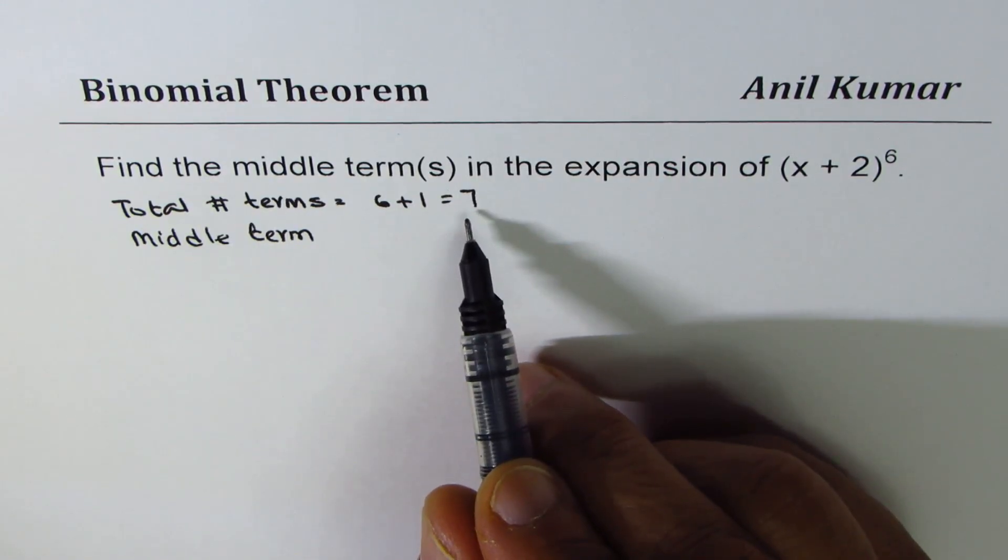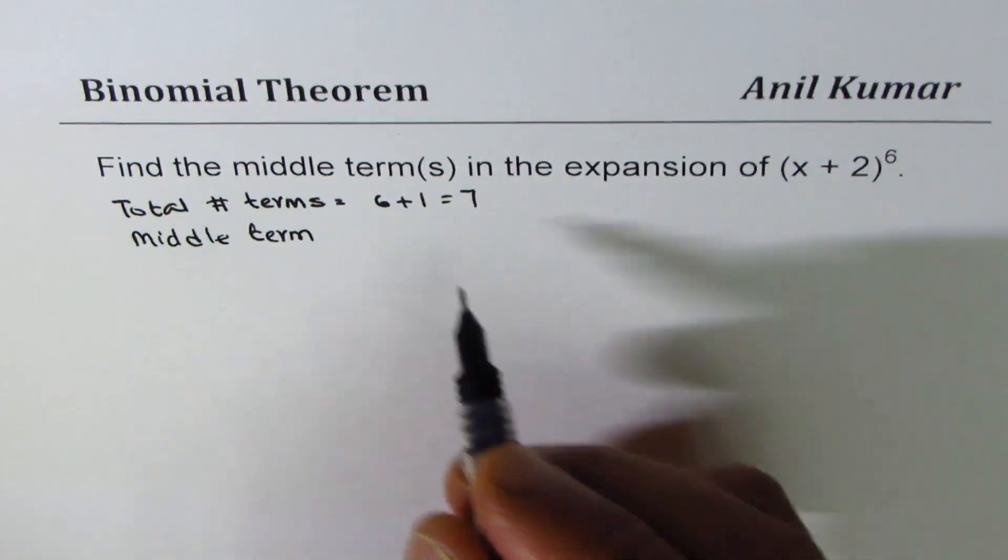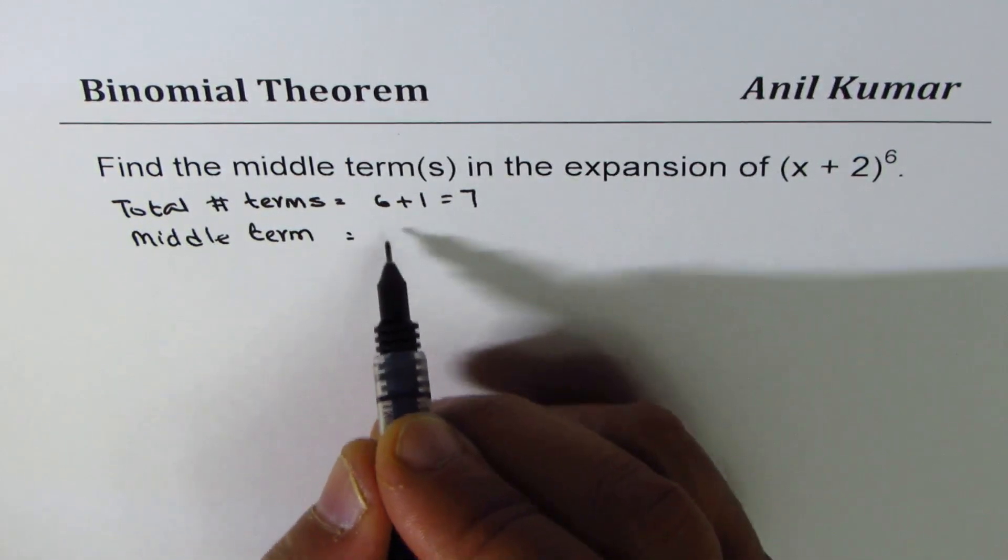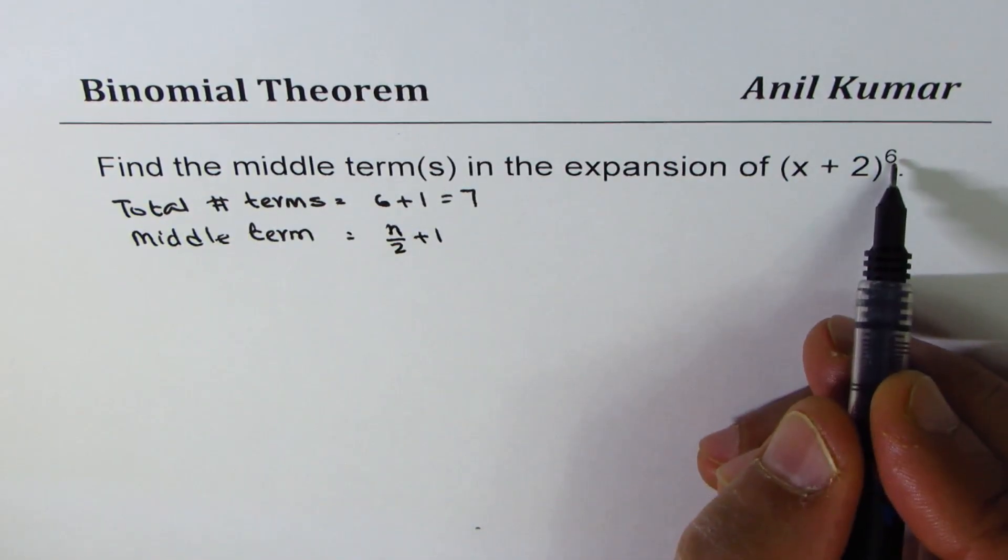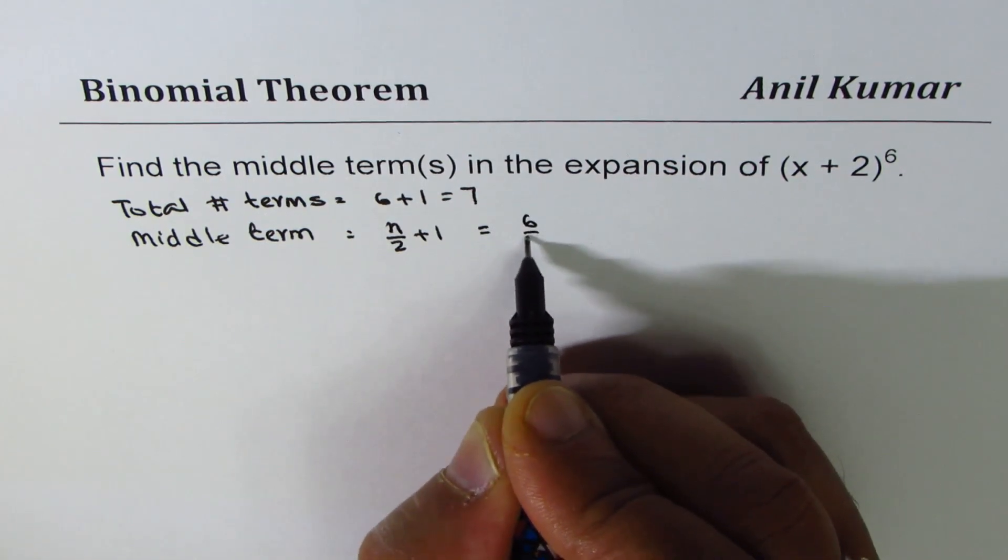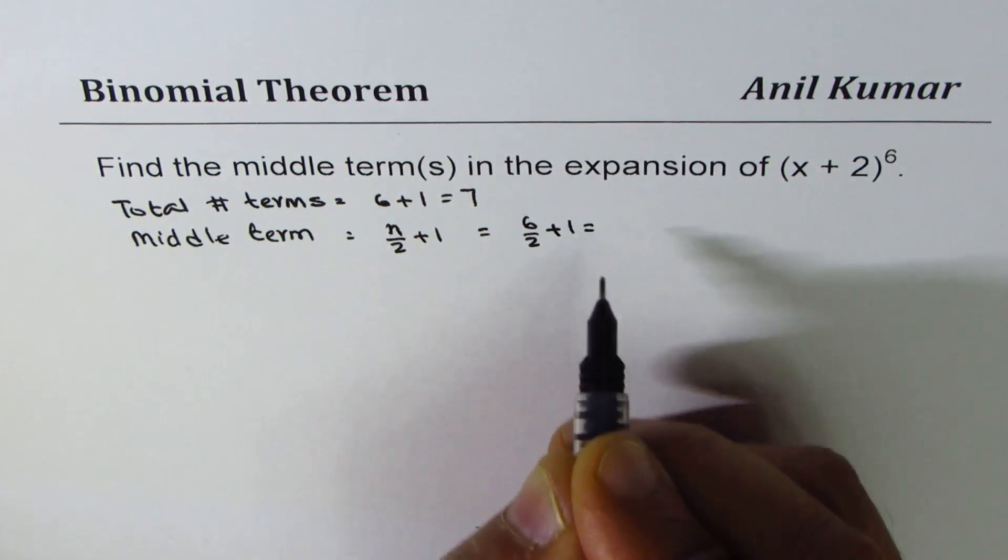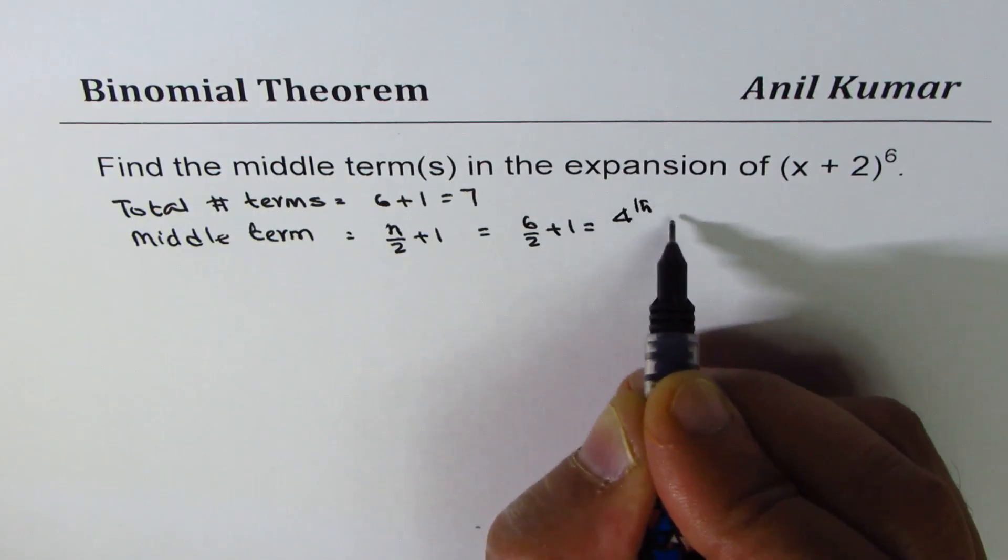So the fourth term is going to be the middle term. Middle term is generally n divided by 2 plus 1 when n is even, so it is equal to 6 divided by 2 plus 1, which is the fourth term.